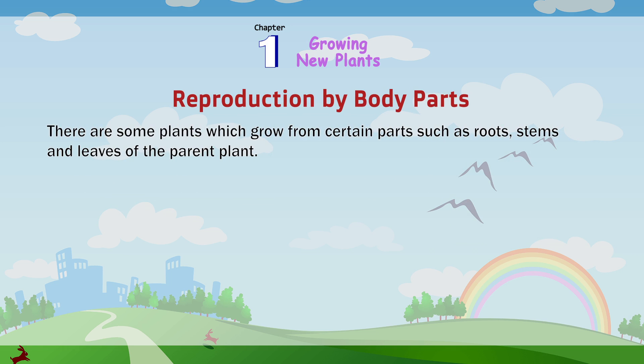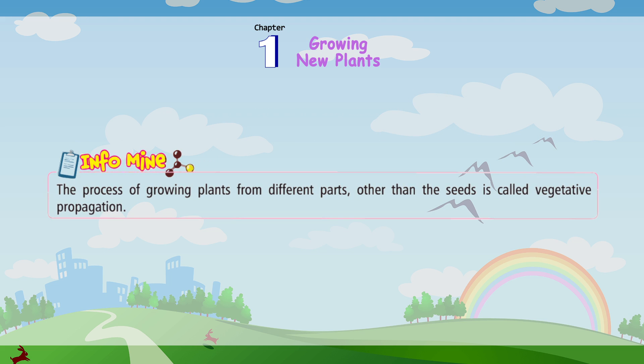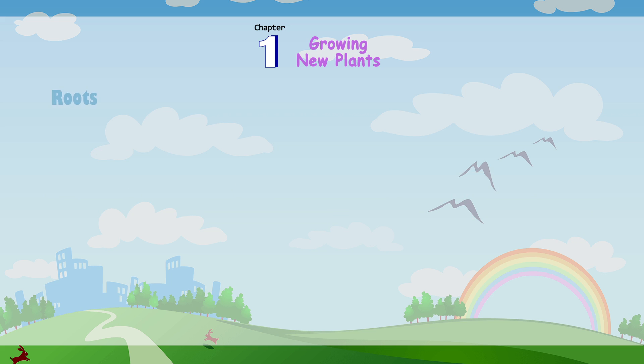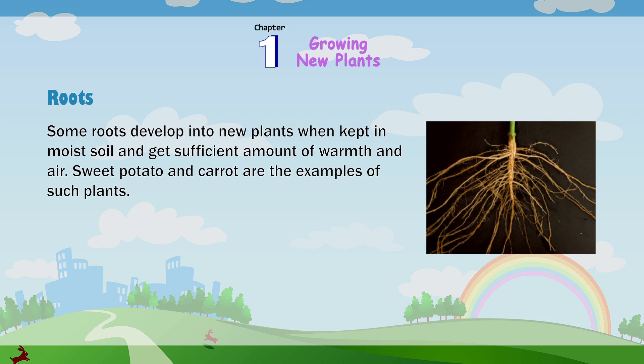Reproduction by body parts. There are some plants which grow from certain parts such as roots, stems and leaves of the parent plant. The process of growing plants from different parts other than seeds is called vegetative propagation. Roots: Some roots develop into new plants when kept in moist soil and get a sufficient amount of warmth and air. Sweet potato and carrot are examples of such plants.